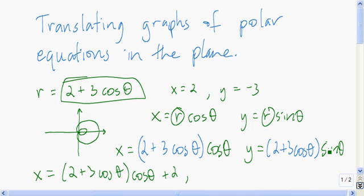And the y coordinate that I'm going to use, or the y parametric equation—I take my r value and multiply by the sine of theta, and then I'm going to subtract 3 from that.